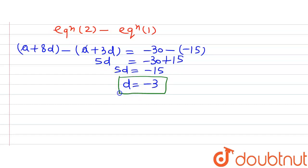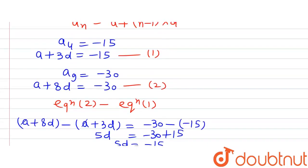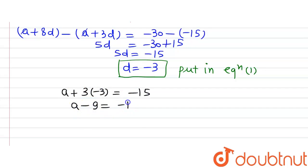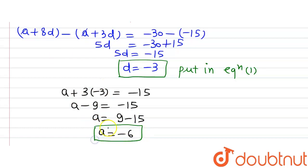Now let us substitute D = −3 into Equation 1 to find the value of A. Equation 1 says A + 3D = −15, so A + 3(−3) = −15, giving us A − 9 = −15. Therefore A = −15 + 9 = −6. We now have both the first term A = −6 and the common difference D = −3.